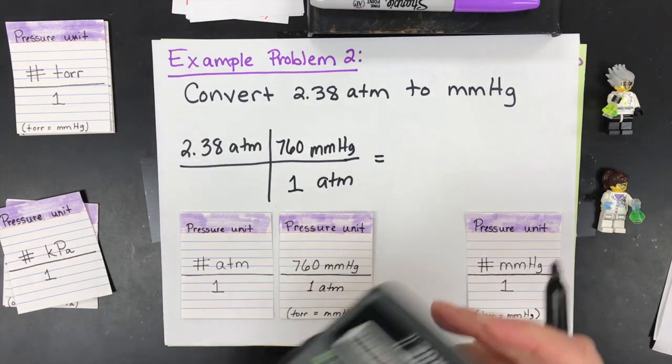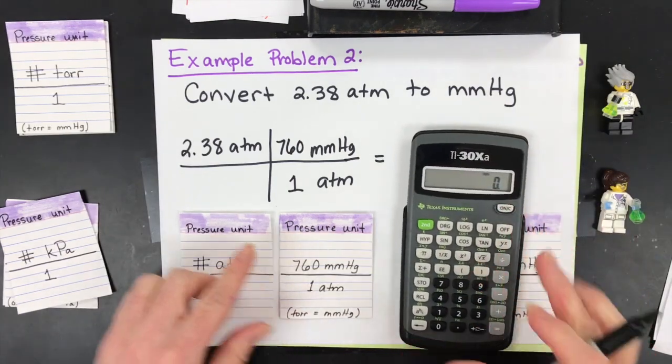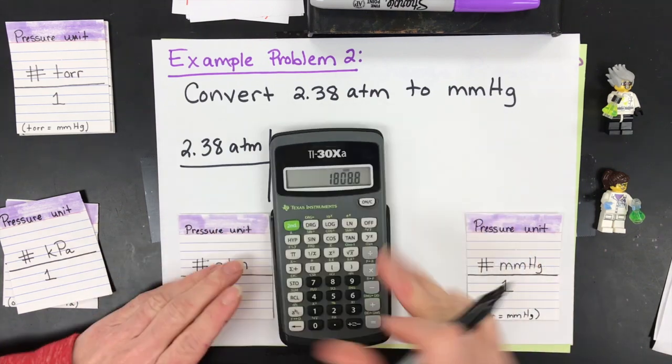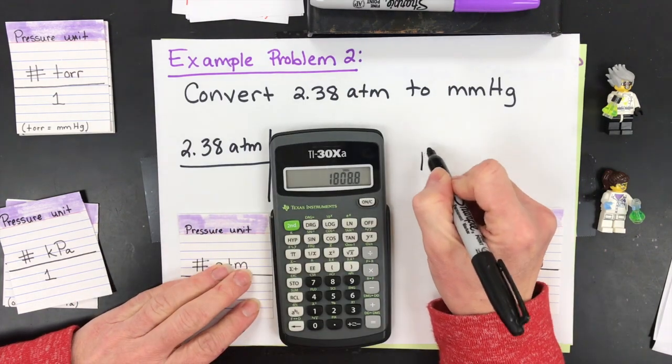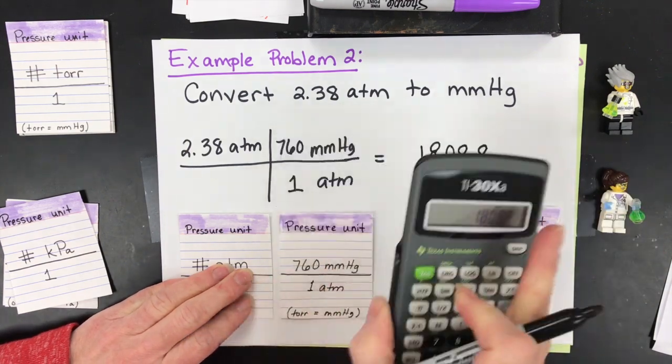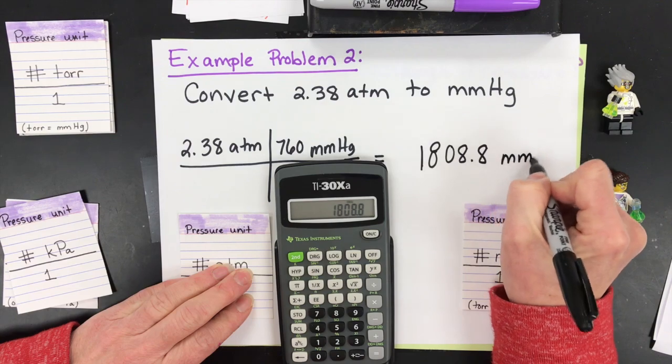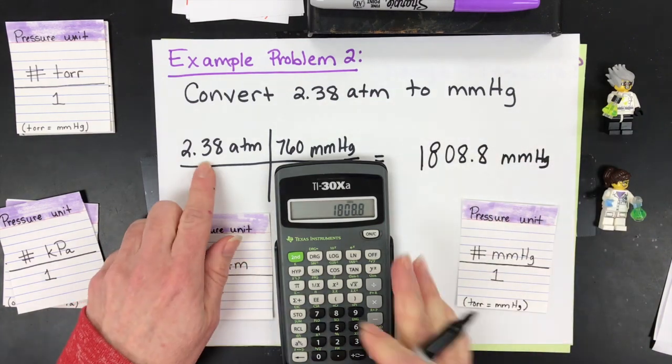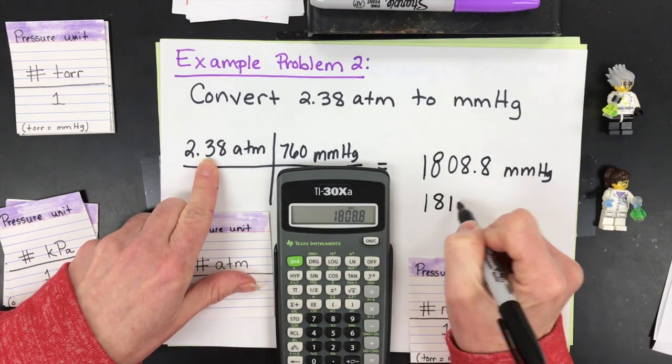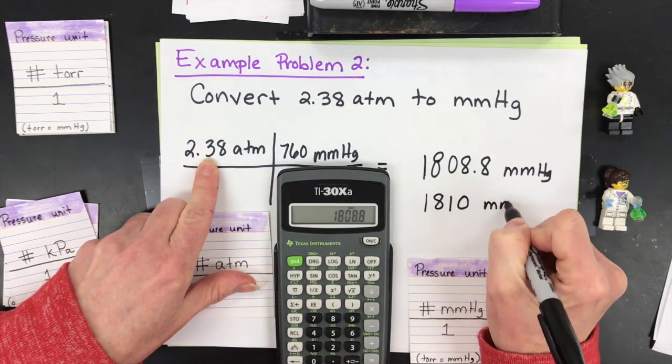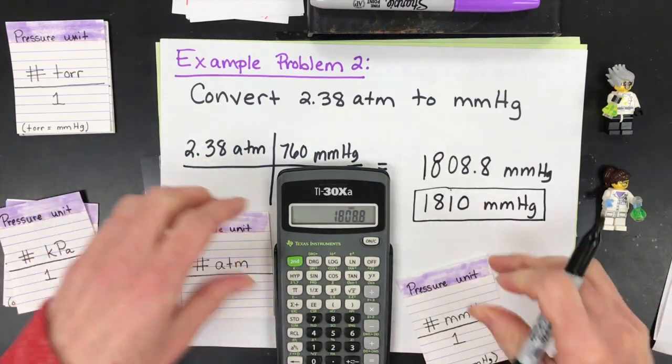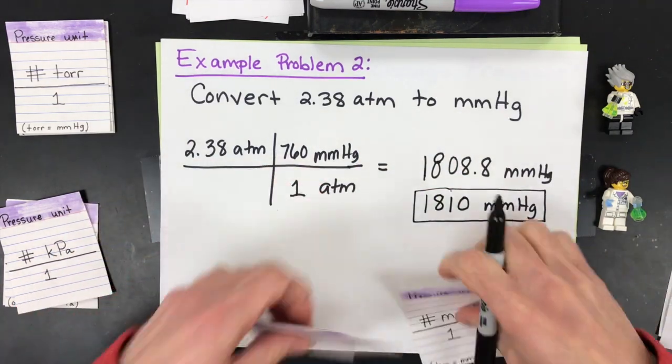Then we have to multiply these. Where's my calculator? 2.38 times 760 equals 1808. But again we can only keep three significant figures. There's three right there, so this will have to be rounded to 1810 mmHg. That zero is not significant, it's just a placeholder.